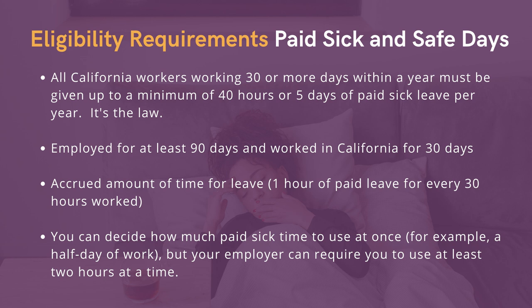Eligibility requirements for paid sick and safe days. All California workers working 30 or more days within a year must be given up to a minimum of 40 hours or 5 days of paid sick leave per year. It's the law. To take paid sick days, you must have been employed for at least 90 days and worked in California for 30 days. You must also have accrued the amount of time for leave, which is 1 hour of paid leave for every 30 days' work.